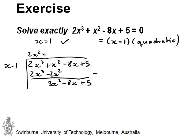Next step, 3x squared divided by x, which is 3x. And we multiply again. 3x times x is 3x squared. 3x times negative 1 is negative 3x.